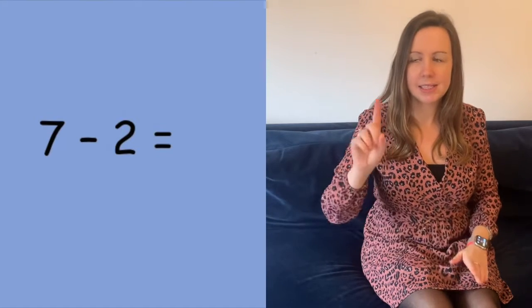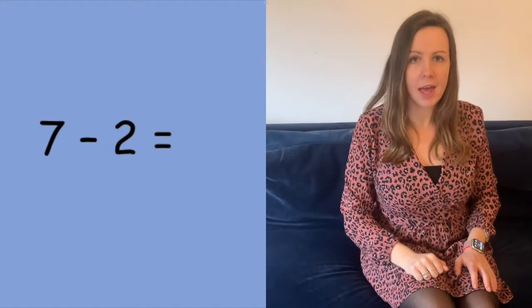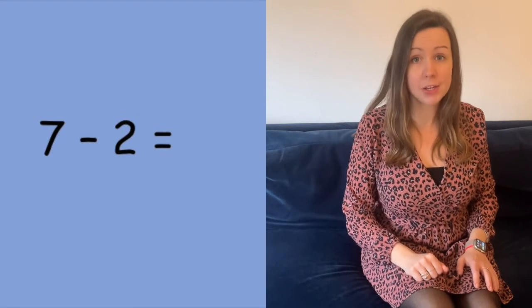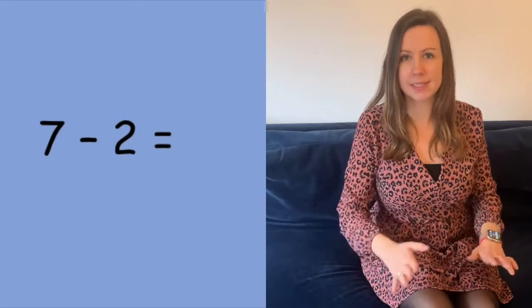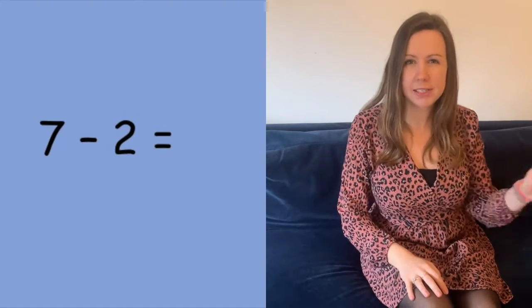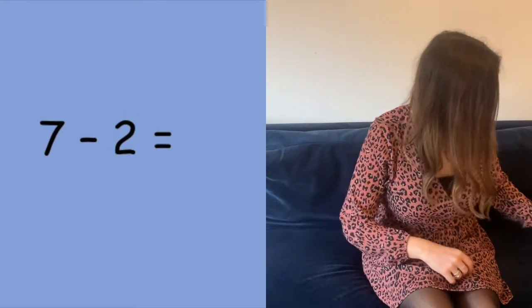Okay, here's our first one. Can you read it with me? Seven take away or minus or subtract two. So how many cubes do we need to start with? Well we always look at the first number in our sum for that. So this one says seven take away two, so we're going to ignore the take away two for a minute. I need a tower of seven, so let's find a tower of seven.